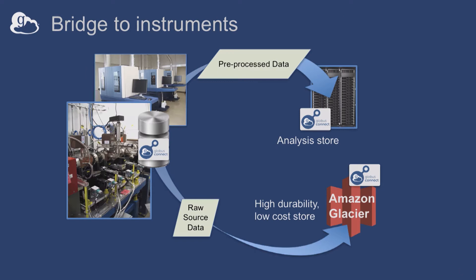Another use case we see quite often is getting data off of instruments and sending it to an analysis store or a low-cost store — Amazon or cloud-based storage. The great thing about Globus is it's automatable and scriptable. You can set cron jobs to do things, automate these tasks, which is great for instrumentation. A lot of these instruments just run Windows, and we've got Globus Connect Personal that people think you just run on your laptop — but we've actually implemented it on several instruments as well.